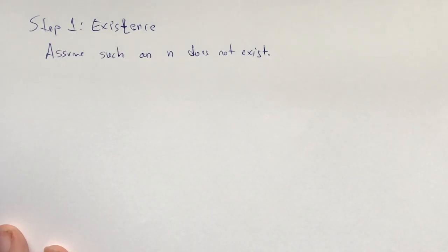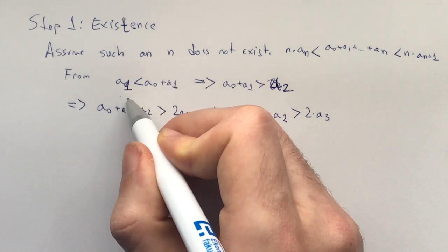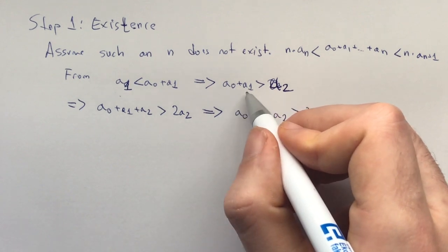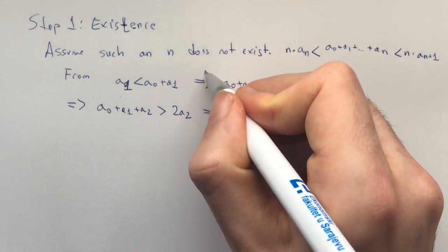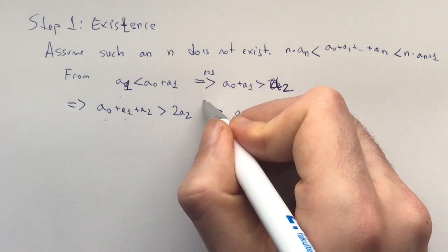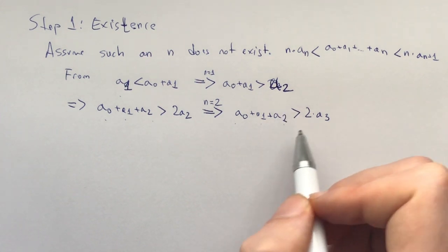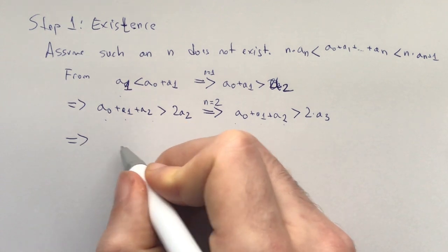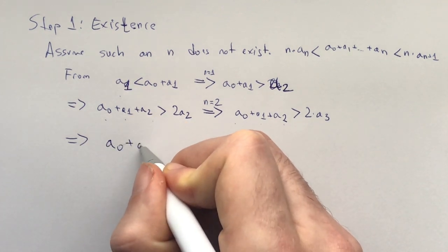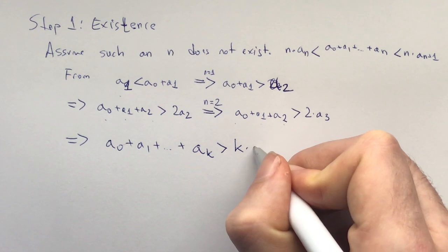We first prove existence of such an n. Assume such an n does not exist. Because a_1 is less than a_0 plus a_1, that implies a_0 plus a_1 is greater than a_2 for n equals 1. This implies a_0 plus a_1 plus a_2 is greater than 2a_2. For n equals 2, this implies a_0 plus a_1 plus a_2 is greater than 2 times a_3. And inductively, this implies a_0 plus a_1 plus ... plus a_k must be greater than k times a_{k+1}.